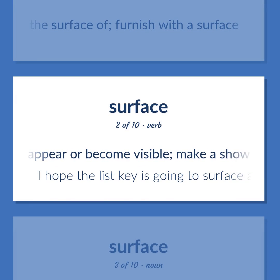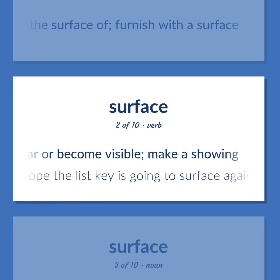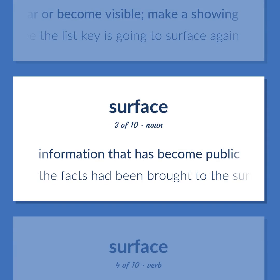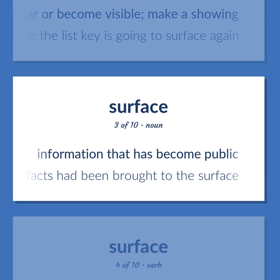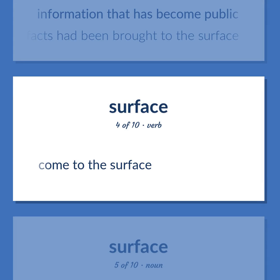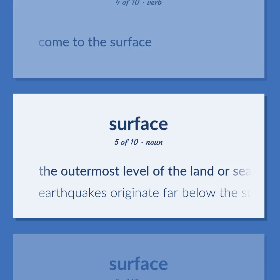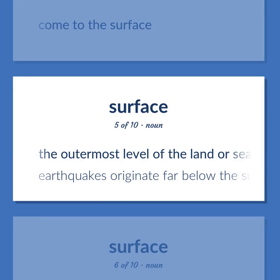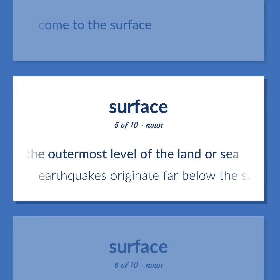Surface (verb): To appear or become visible; make a showing. Example: I hope the lost key is going to surface again. Information that has become public — the facts had been brought to the surface. Also: to come to the surface. The outermost level of the land or sea — earthquakes originate far below the surface.